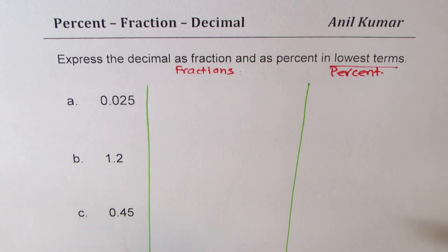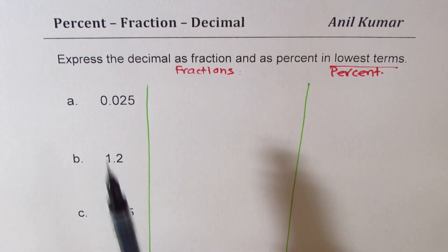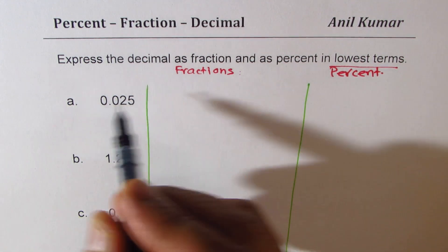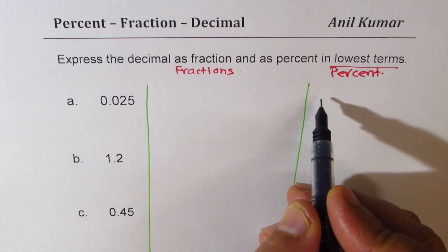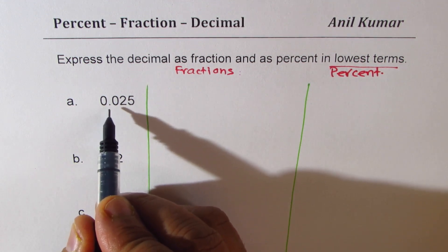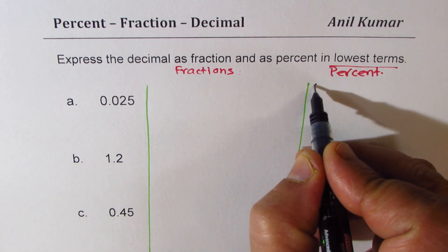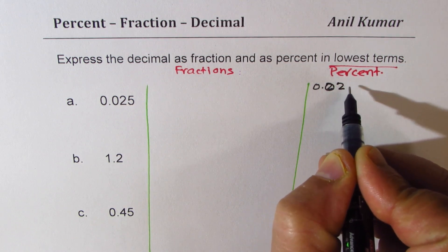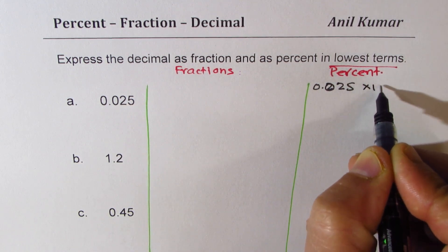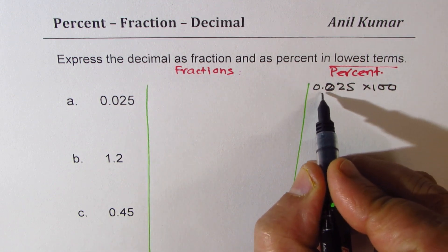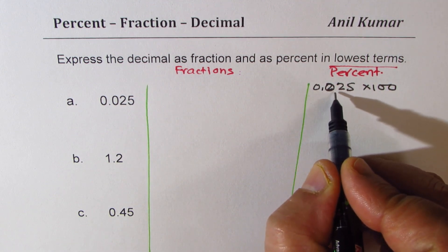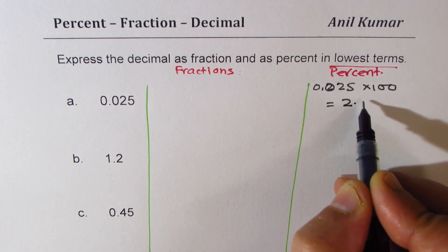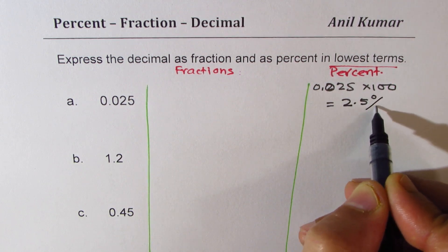Percent is very simple — to get percent from a decimal, we only need to multiply by 100. So if you take 0.025 and multiply by 100, the decimal moves two places, and we get 2.5 percent.